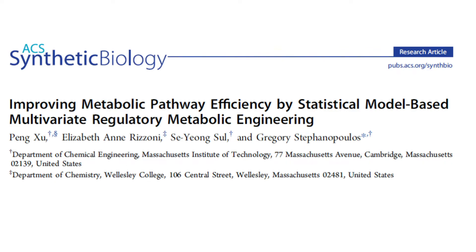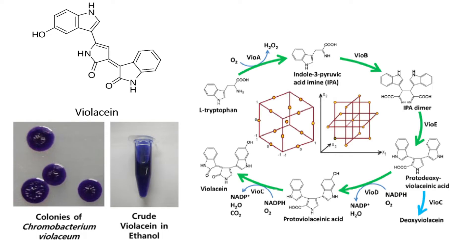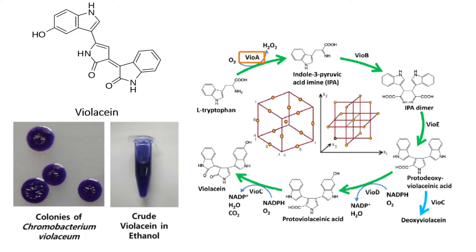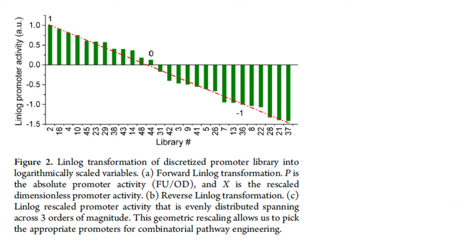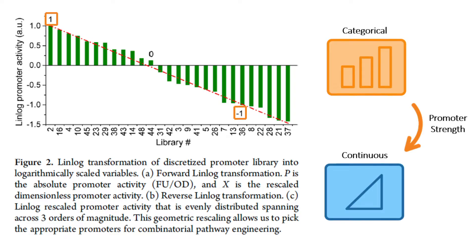In a similar case study to Amy, work by Hsu et al. in 2017 employed design of experiments, or DOE, to optimize the production of violacein. Violacein is a naturally occurring pigment with interesting commercial use in cosmetics, medicines, and fabrics. The pathway to produce violacein is defined by five genes: VIO A, VIO B, VIO C, D, and E. To make use of design of experiments, the authors first constructed a T7 promoter library with transcriptional activity that spans three orders of magnitude. Promoter strength was discretized into logarithmically scaled variables where one indicated a strong promoter and minus one indicated a weak promoter. This allowed promoter strength to be included in the DOE as a continuous factor for each of the five enzymes.